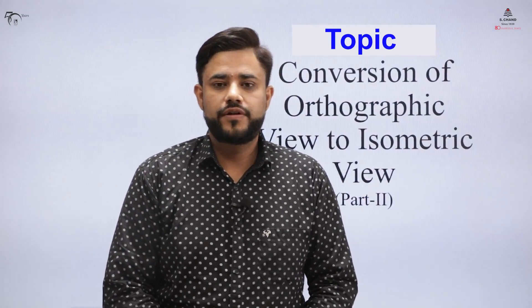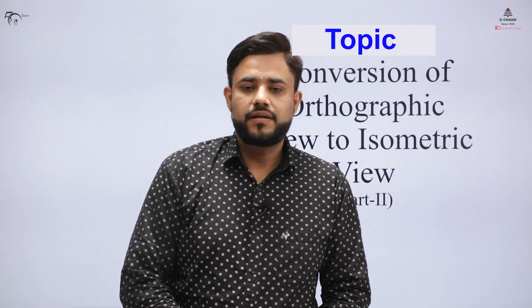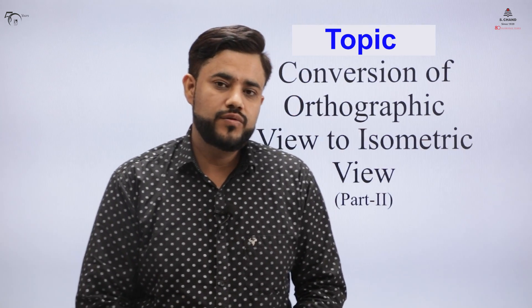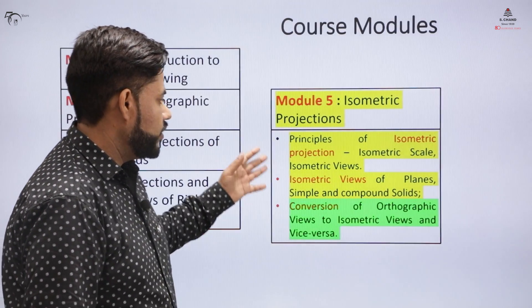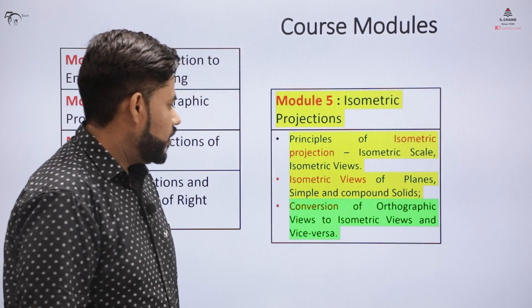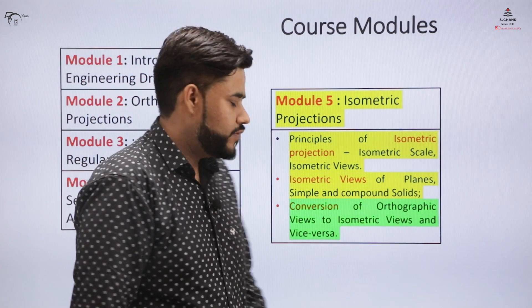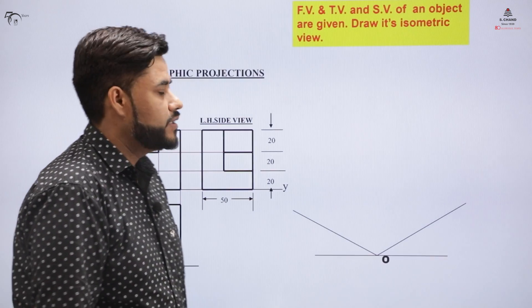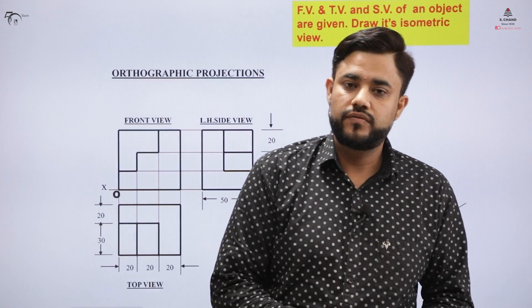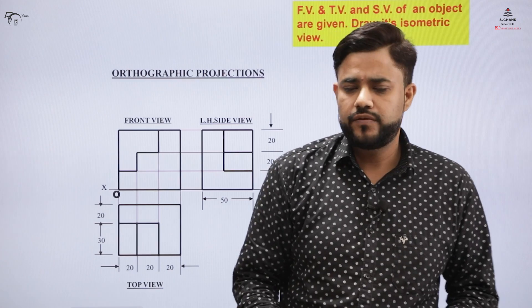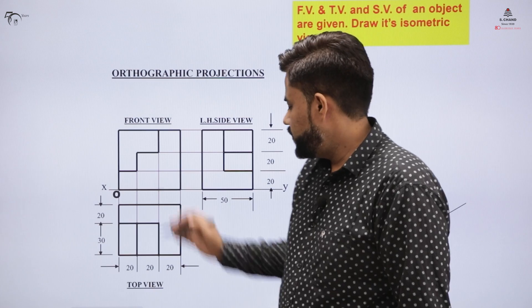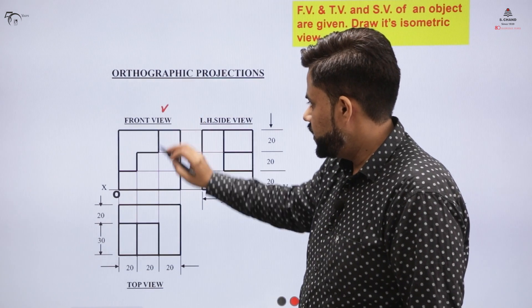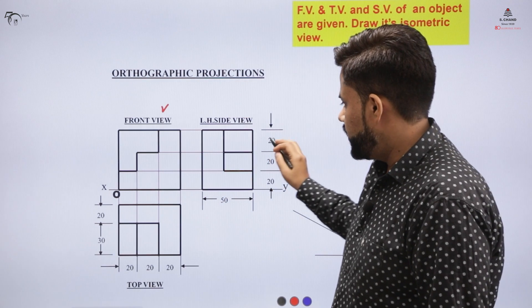This is the second part of the video titled 'Conversion of Orthographic Views into Isometric Views.' We are on module number 5, which covers this topic. For this, we consider an example where you are given the front view, the side view, and the top view. The front view is shown here with dimensions indicated.